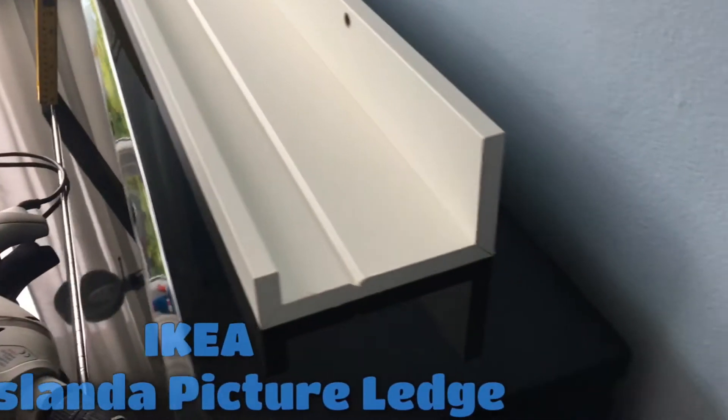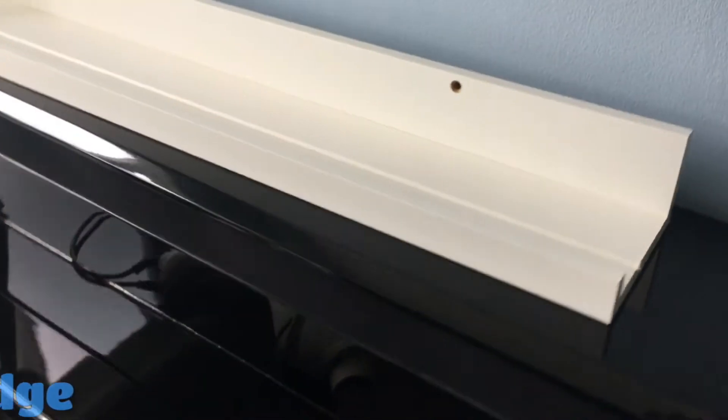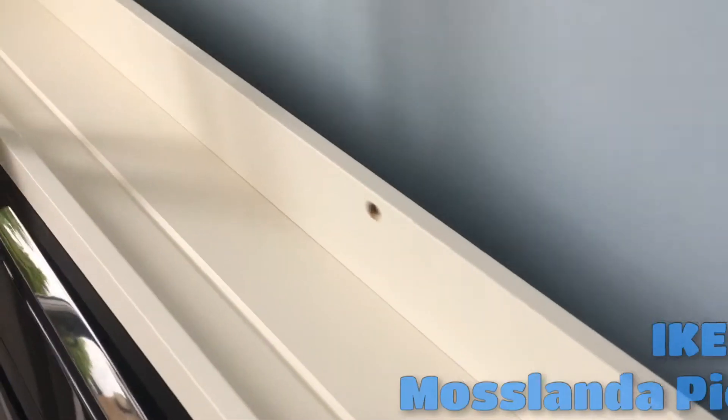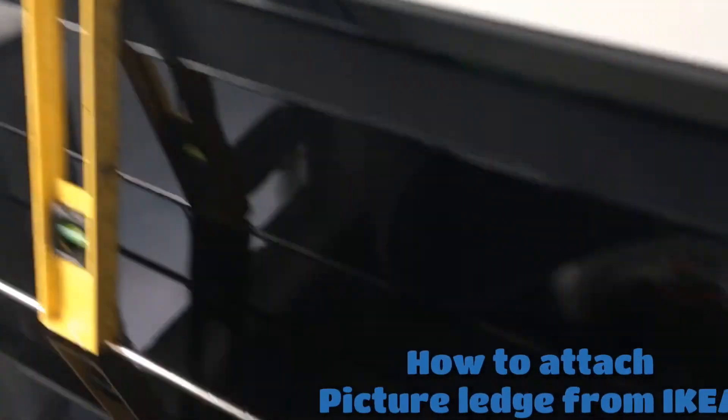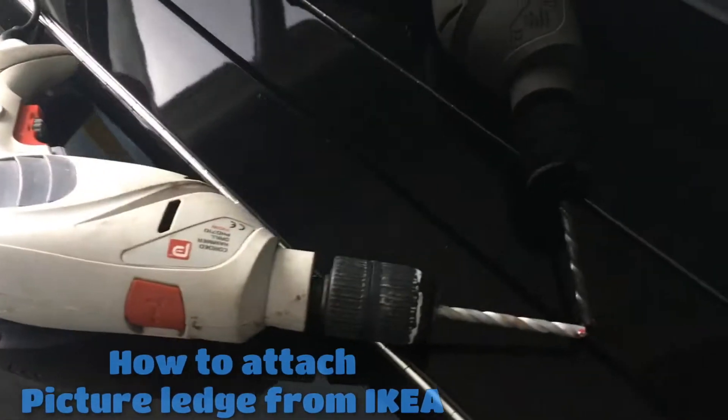Hello everyone, welcome back to my channel. Today we've got another project - we got ourselves a picture ledge from Ikea. The name of this item is Mosslanda and it's in white, and what I'm showing on the camera now.